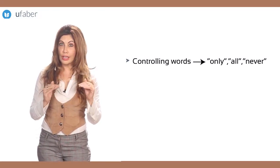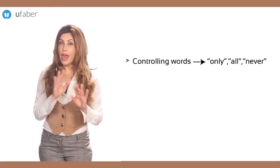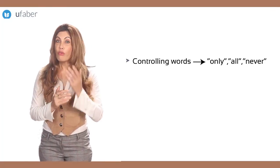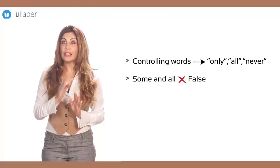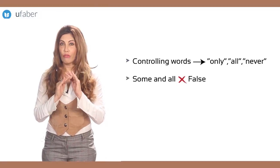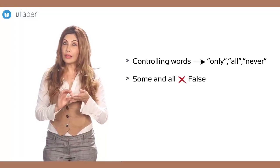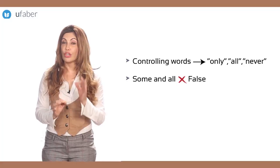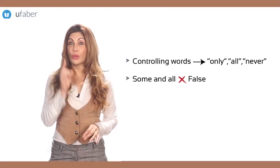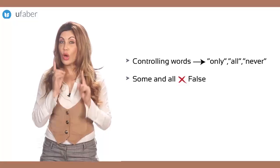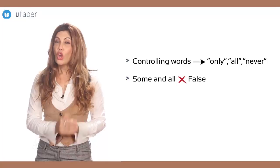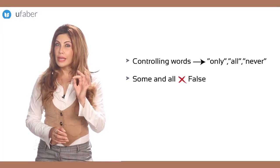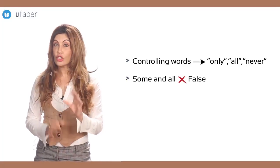Look out for controlling words such as 'only,' 'all,' 'never,' etc. For example, if the fact in the question says 'some' and the fact in the text says 'all,' then it is False. Underline the words in the text that give you the answer. This helps you concentrate and also allows you to change your mind if you find a better answer later.